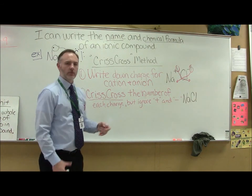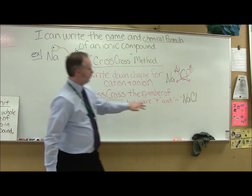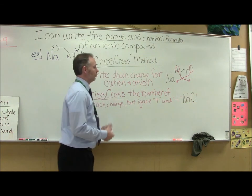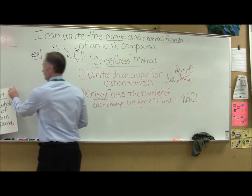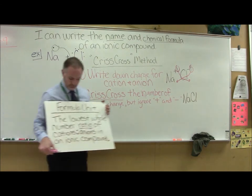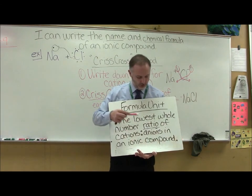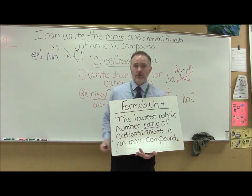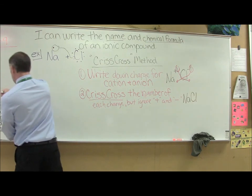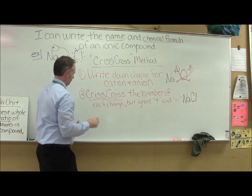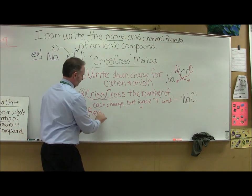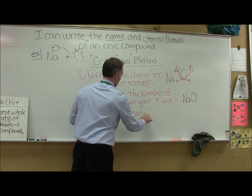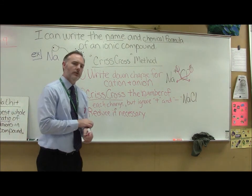Now I have one more rule that we have to write down for doing the formulas with our crisscross method. If you can reduce the numbers down here, if there's a couple twos Na2Cl2, we're going to have to reduce because our formula unit is the lowest whole number ratio of cations to anions. So it's the lowest whole number ratio so we might have to reduce if we can. Step three, reduce if necessary. It has to be the lowest whole number ratio possible for these numbers.